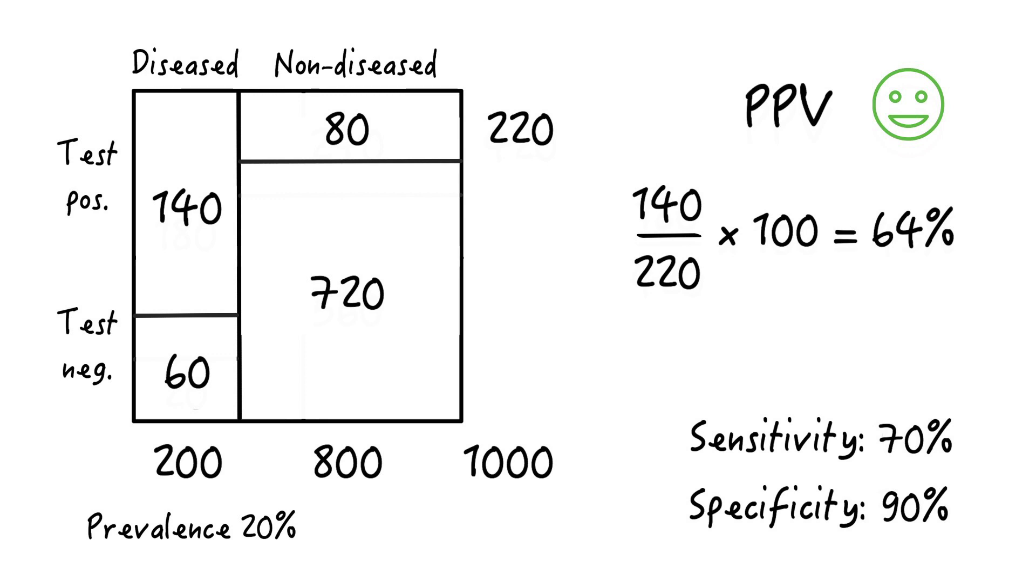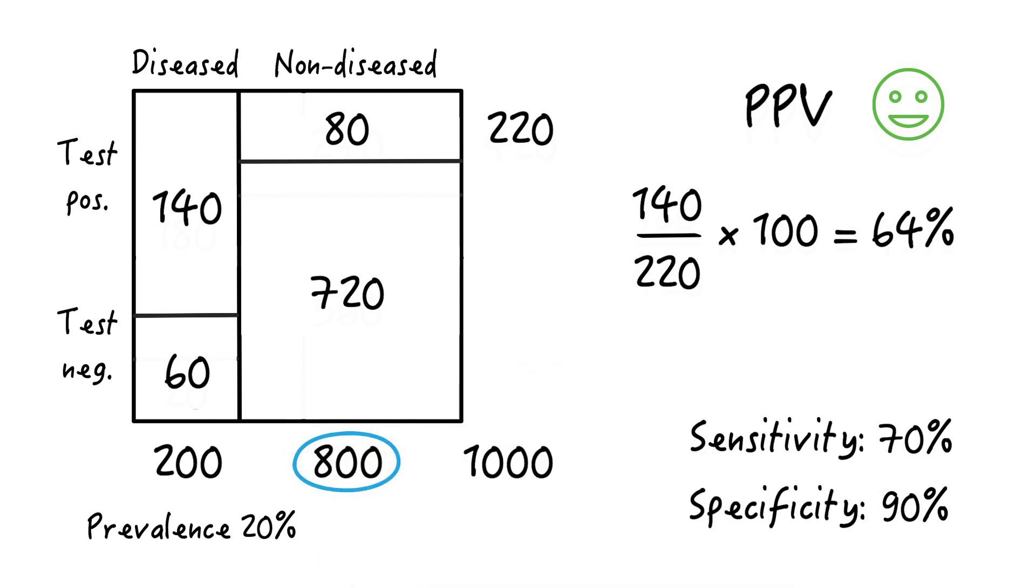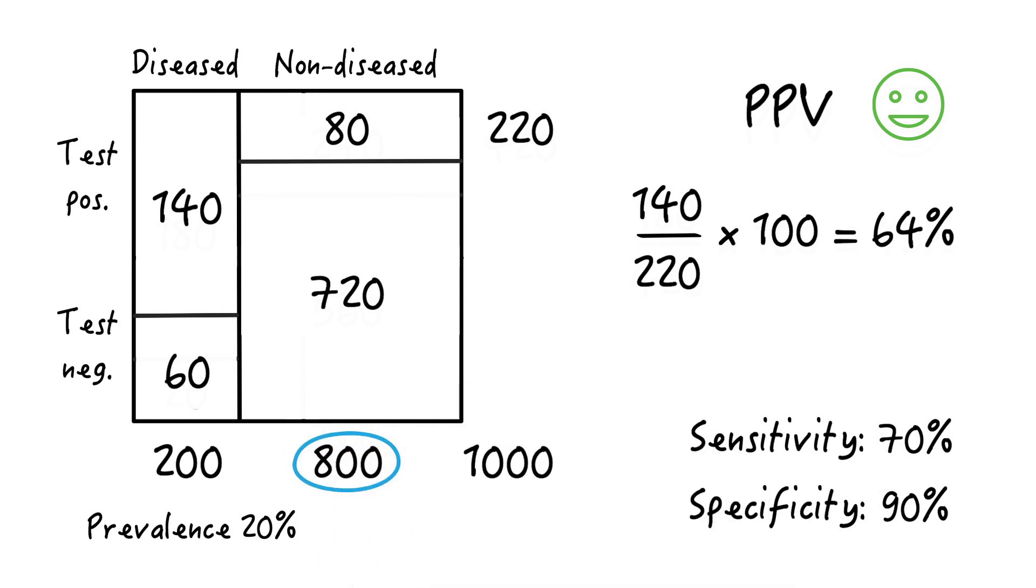And why does specificity have so much more influence on the positive predictive value than sensitivity? Well, because there are many more people in the non-diseased group. Therefore, a 1% change on the right side of the vertical line, or the specificity, has a much bigger impact than a 1% change on the left side, or the sensitivity.